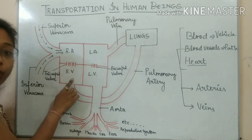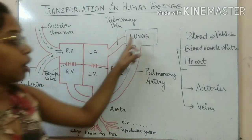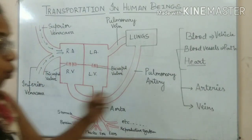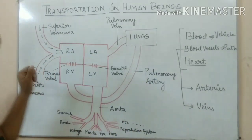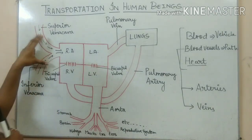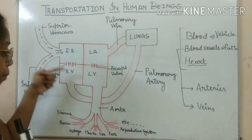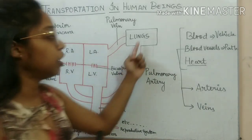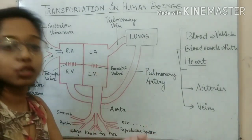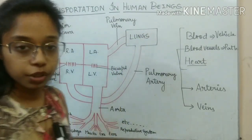From the right ventricle, this deoxygenated blood goes into the lungs via an artery. Now you can understand: the blood vessels carrying blood from all body parts to the heart are called veins. Since these are large veins, they are called vena cava. When blood goes from the right ventricle to the lungs, that vessel is called an artery — because arteries carry blood from the heart to parts of the body, and the lungs are a part of the body.